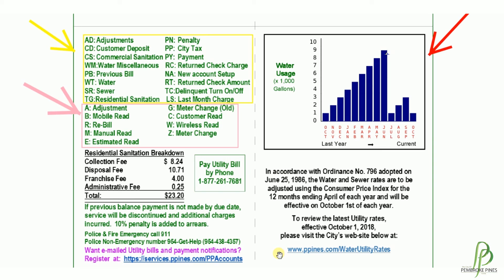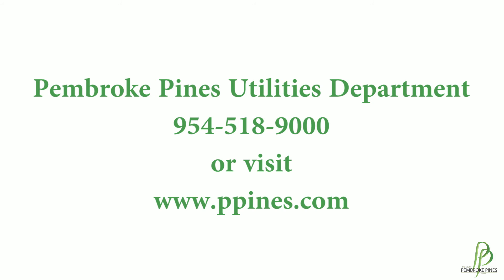For more information or if you have further questions regarding your utility bill, please reach out to the utility office at 954-518-9000, or you can reach out to us via the city's website at ppines.com.